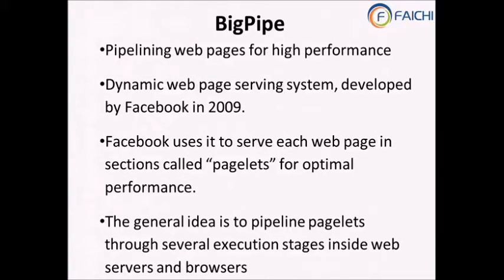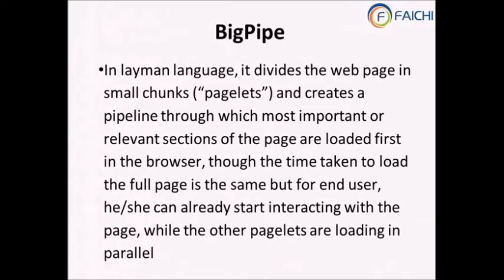The generic idea is that several execution stages will be sent between the web browser and server as pagelets. In layman's terms, pagelets load the most important part of the page first. The total page load time is actually the same — that's why I say perceived performance. If you inspect the network tab, the total load time doesn't change, but the relevant sections appear first because that's what BigPipe is about.